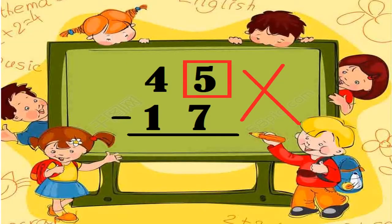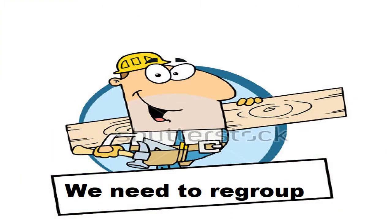We need to subtract or take away 17 blocks. So let's start with subtracting the ones. How many ones do we need to subtract? We need to subtract 7. Wait! We can't take away 7 ones. To solve this problem, we need to regroup.